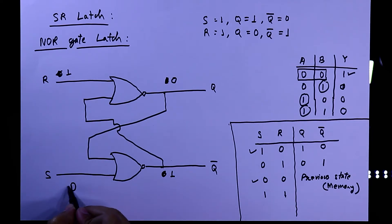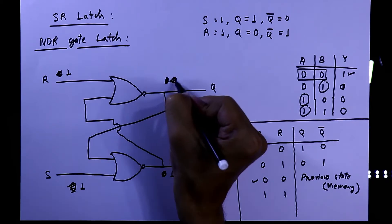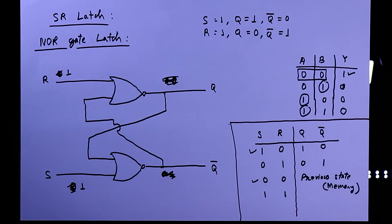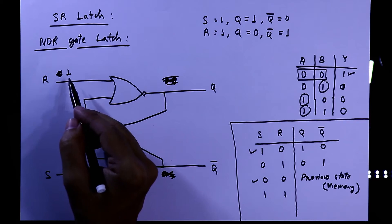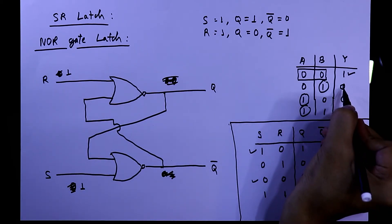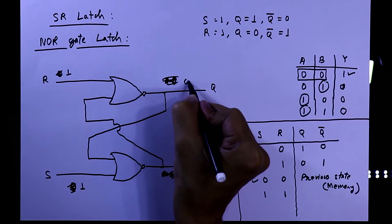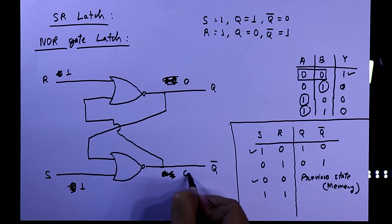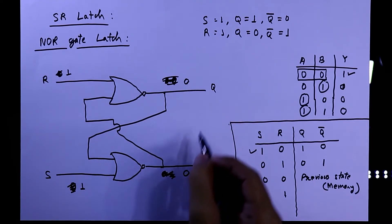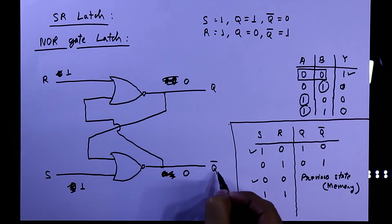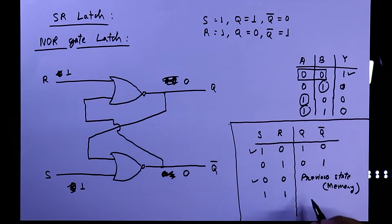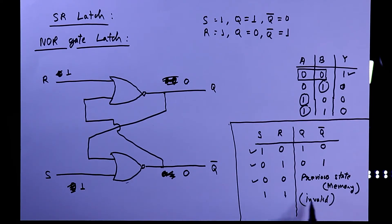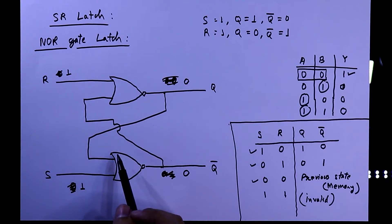For the fourth condition, both S=1 and R=1. Any input of 1 gives output 0, so both outputs would be 0. But Q and Q-bar must be opposite — this is not possible. So this state is invalid, and we need to improve the circuit.